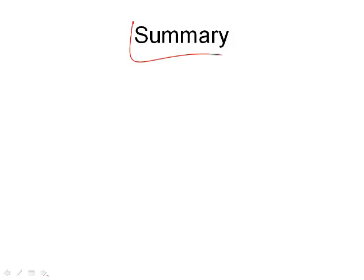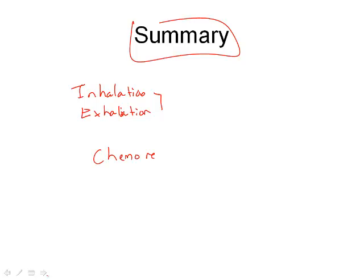Just as a summary, we want to know the processes of inhalation and exhalation — we also call those inspiration and expiration — and then finishing off with the chemoreceptors and basically how that leads to an increase in our breathing rate. If you have any questions about that or if I was unclear on anything, jot them down and we'll discuss them in class. Have a wonderful day.